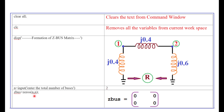Next, initialize the ZBUS matrix by putting 0 for all the elements. Two buses correspond to a 2x2 ZBUS matrix, so the order of the ZBUS is 2x2, and here we put the value 0 for all the elements. This is the initialization of the ZBUS matrix.